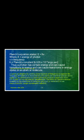Planck's equation states E = hν, where E is the energy of the photon, ν is the frequency, and h is Planck's constant, which has the value 6.626 × 10⁻²⁷ erg·second. Thus, a photon has certain energy and can cause transitions in energy states in an atom or molecule. A spectrum is obtained by plotting some function of frequency against the frequency of radiation, characteristic of a particular chemical species and useful for its identification in spectrophotochemical analysis.